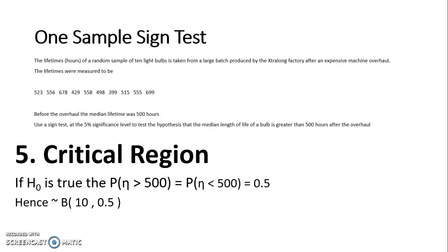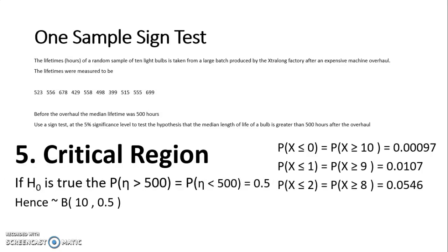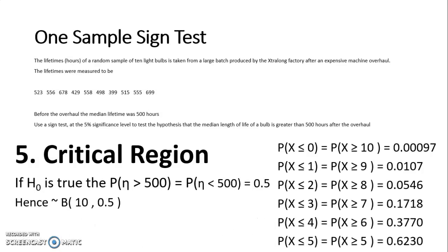I can get the probabilities from my statistical tables or from my calculator. I'm just going to create some probabilities. Because I'm using this symmetry of 0.5, I can say the probability X is less than or equal to 0 is the same as the probability that X is greater than or equal to 10. Getting that value from my calculator, I can see that is 0.00097. So I'm going to do that for the first few values of X: less than or equal to 1 is the same as greater than or equal to 9, less than or equal to 2 is greater than or equal to 8, etc. I've just calculated those probabilities on my calculator and put them on the screen. Obviously, I can go all the way up to less than or equal to 10 and greater than or equal to 0, but I will never need to go that far.